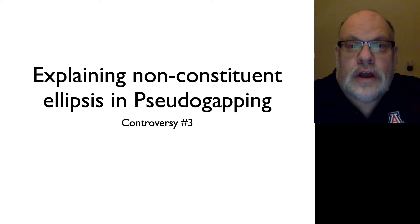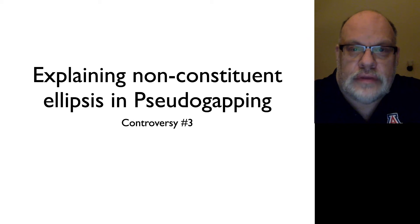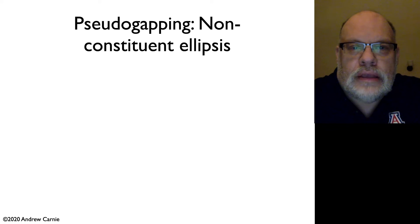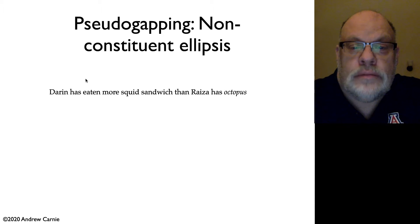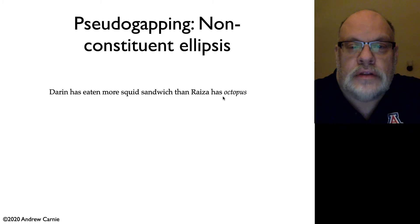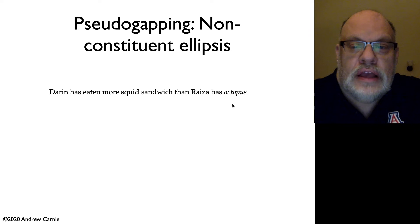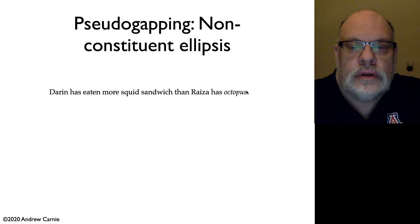In this video, we address our third controversy that arises in the context of ellipsis. The particular kind of ellipsis that is a controversy here is called pseudogapping. Pseudogapping is a phenomenon where you seem to be deleting material that doesn't form a single constituent. This kind of construction often shows up in a comparative environment, where you're comparing one thing to another, and you leave off all the material that is not contrasted.